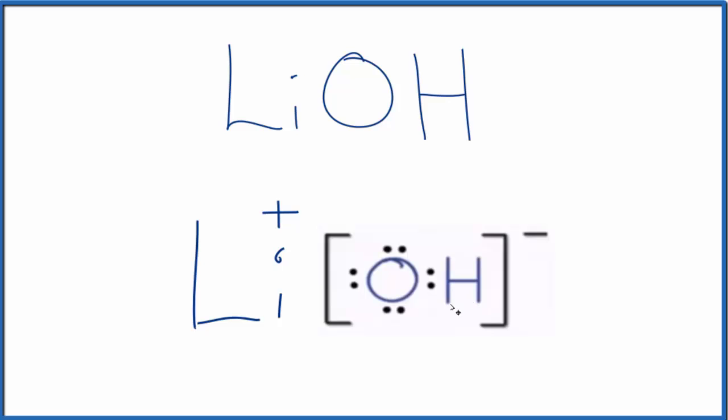So this is the Lewis structure for lithium hydroxide. And the brackets here, they show that this pair of electrons right here, it's not shared. This is an ionic bond. So we're not sharing these electrons, the brackets show that that's the case.